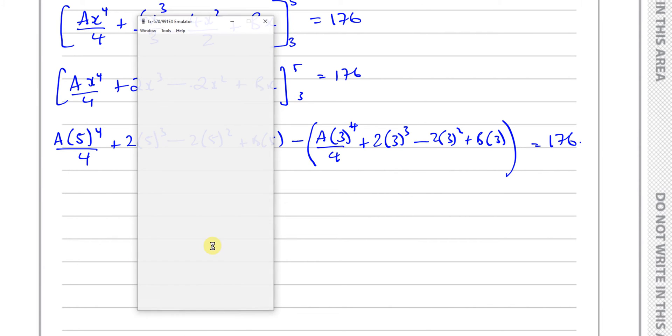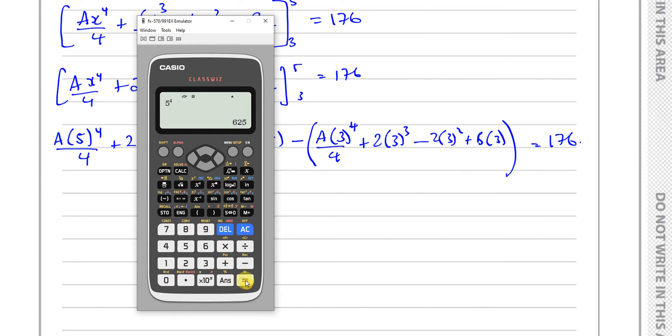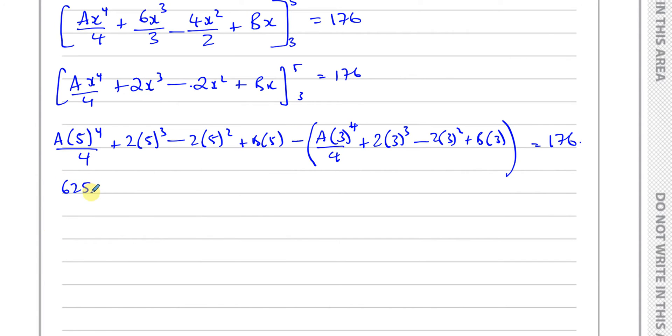Let's simplify these first. This is ax⁴ over 4 plus 2x³ minus 2x² plus bx, limits 5 and 3, equals 176. Now we can start substituting the values. So we have a times 5⁴ over 4 plus 2 times 5³ minus 2 times 5² plus b times 5. Be very careful about the minus sign there.